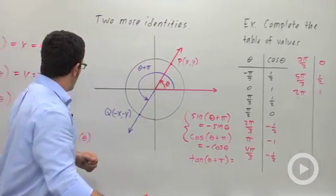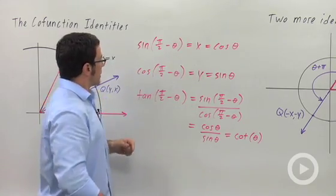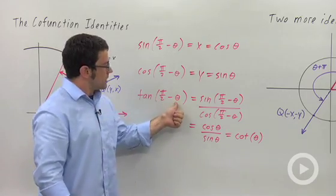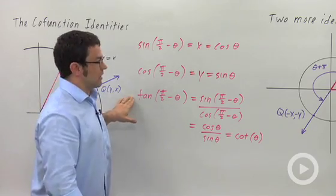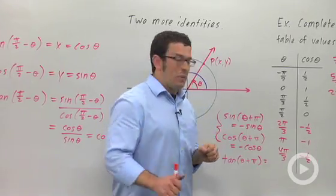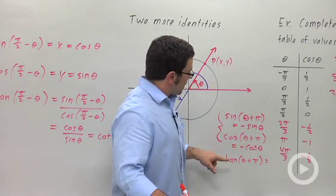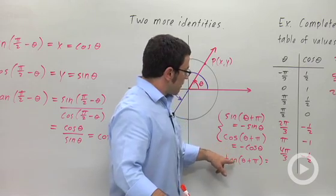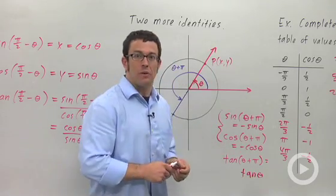To recap: we've got the co-function identities — sine of pi over 2 minus theta equals cosine theta, cosine of pi over 2 minus theta equals sine theta, and tangent of pi over 2 minus theta equals cotangent theta. These identities are true for all six trig functions. Then we have the add-pi identities: sine of theta plus pi is the opposite of sine theta, cosine of theta plus pi is the opposite of cosine theta, and tangent of theta plus pi equals tangent theta, because tangent has period pi.